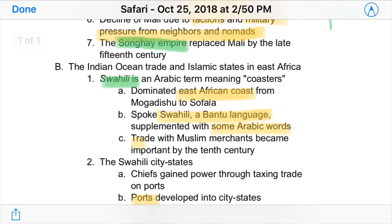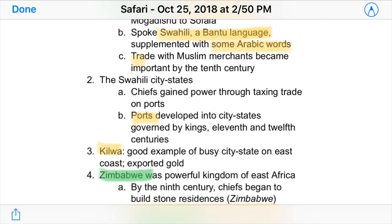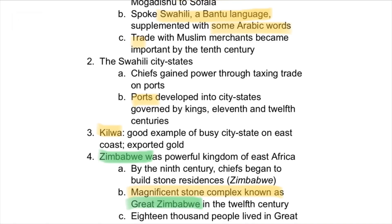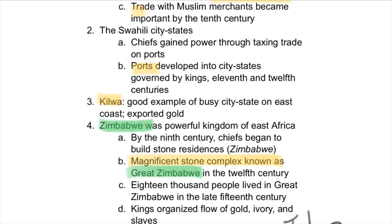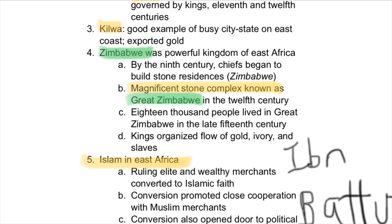On the other side of the continent was the Indian Ocean trade and the Islamic states of East Africa, commonly called the Swahili states — an Arabic term meaning 'coasters.' These states dominated the East African coast and spoke Swahili, a syncretic Bantu language with Arabic words mixed in. These people traded heavily with Muslim merchants, and this trade was really significant by the 10th century. Many ports were developed and became city-states governed by kings, and in the 11th and 12th centuries the region became a main center of trade. One good example was Kilwa, which exported gold. A final significant place on the Swahili coast was Zimbabwe — a powerful kingdom of East Africa.